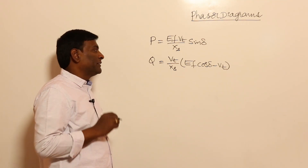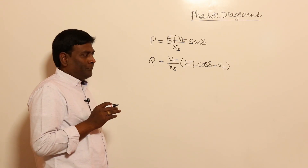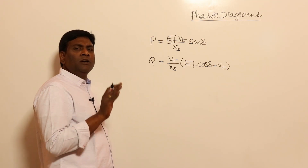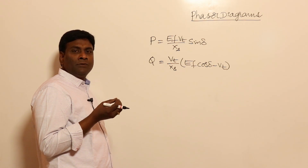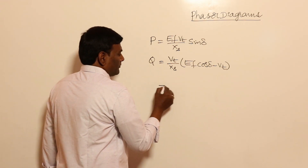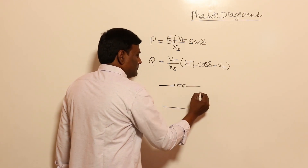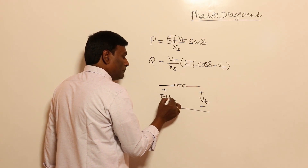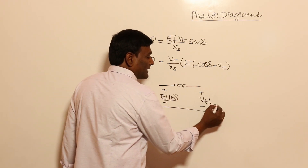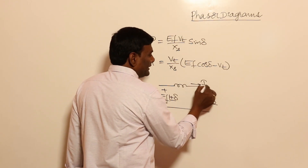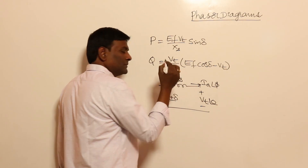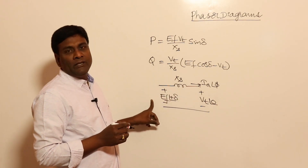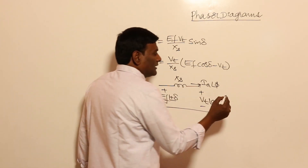We derived these two equations in our previous session. Now let us draw one phasor diagram. We should not get confused — whatever phasor diagram we have drawn for the transformer, the same thing we are going to do, except that resistance will not be considered. So if this is Vt and this is Ef at an angle plus delta, and Vt at angle zero, and Ia at angle phi, then in the transformer phasor diagram: Vt + Ia·Xs = Ef.